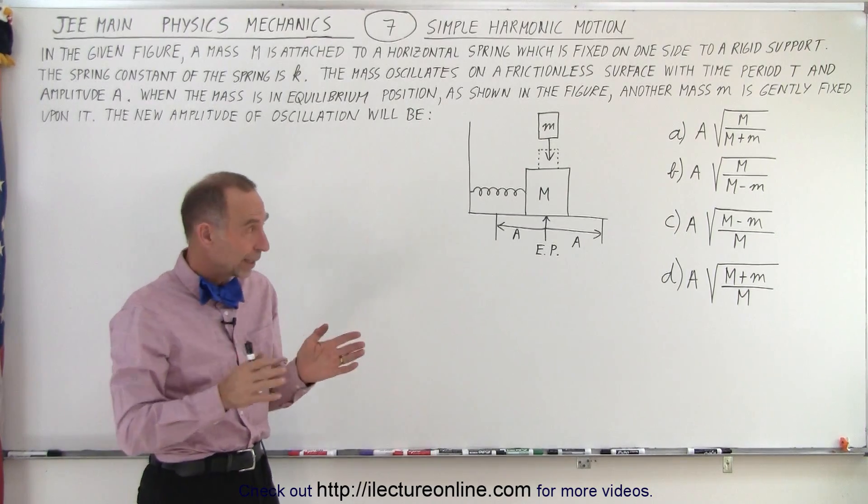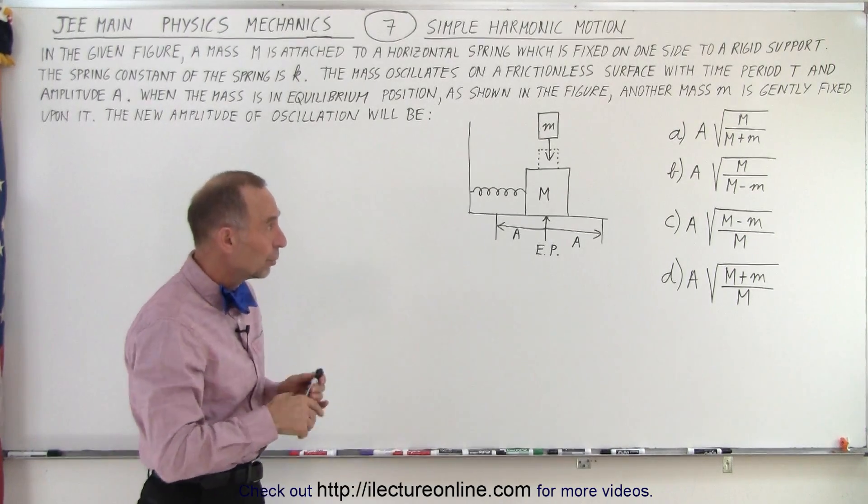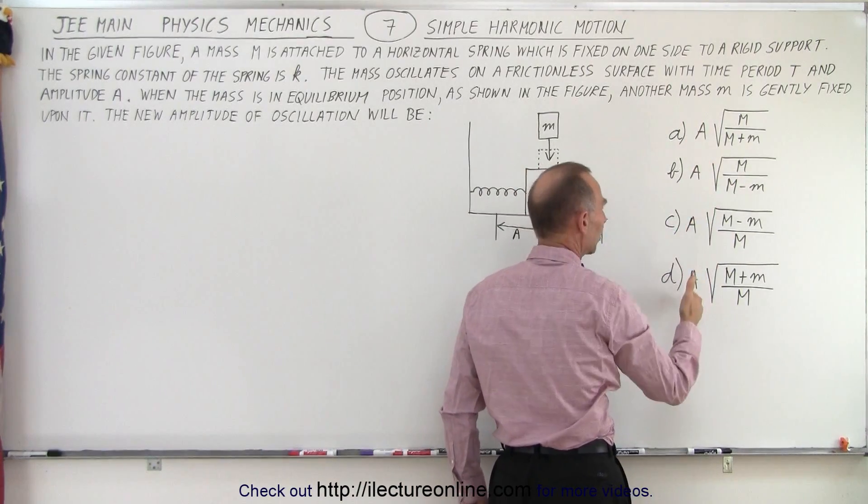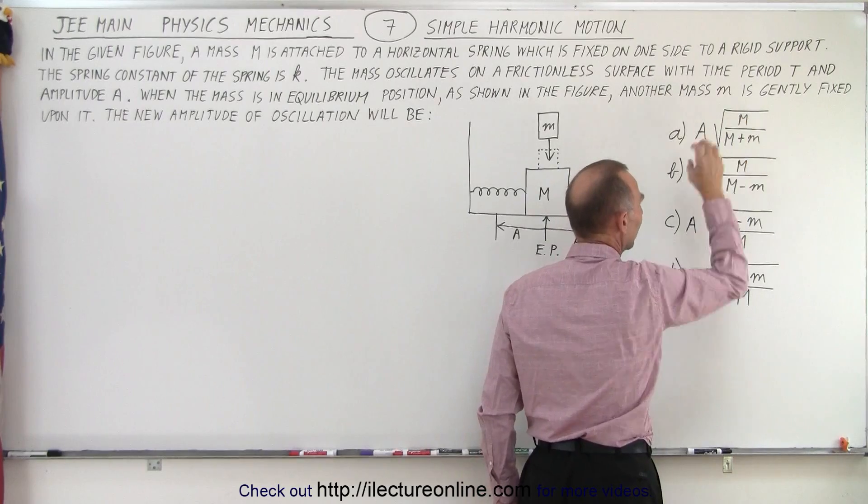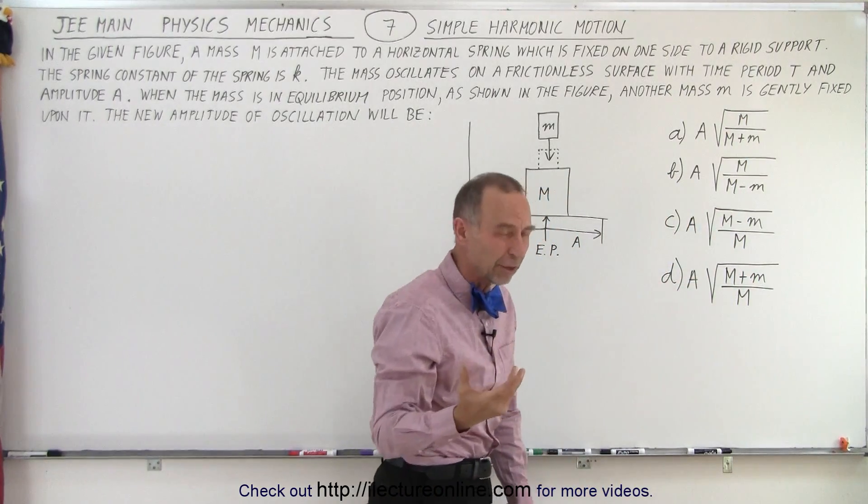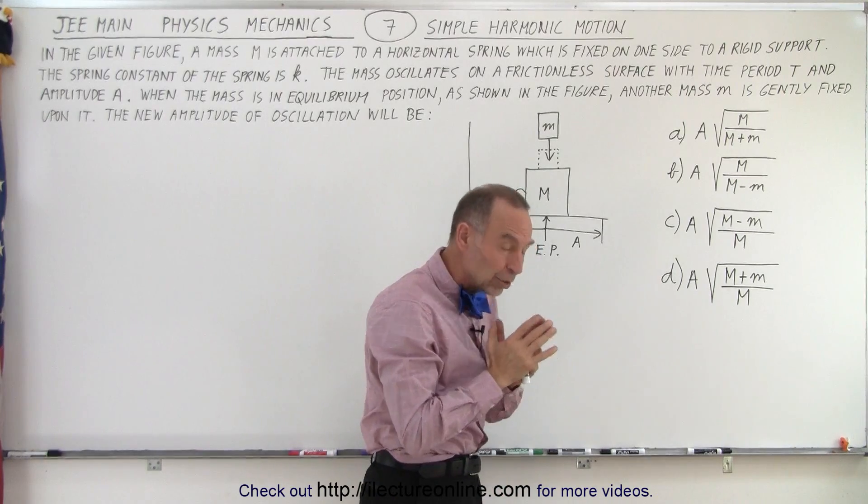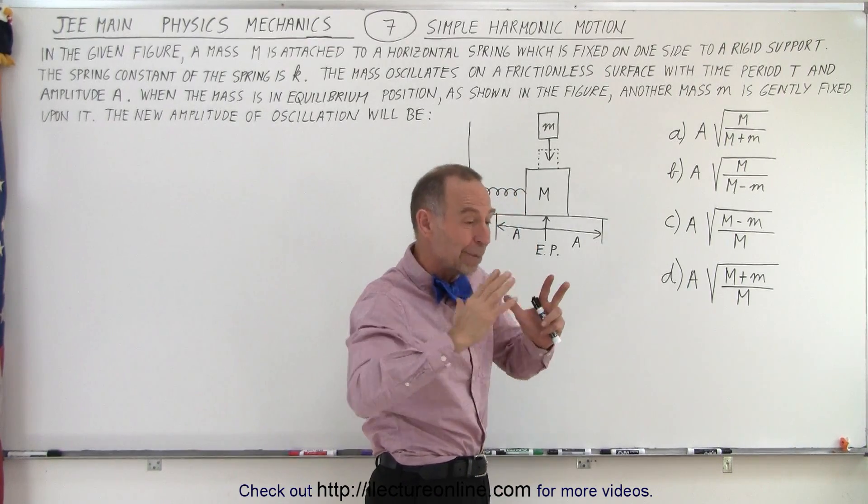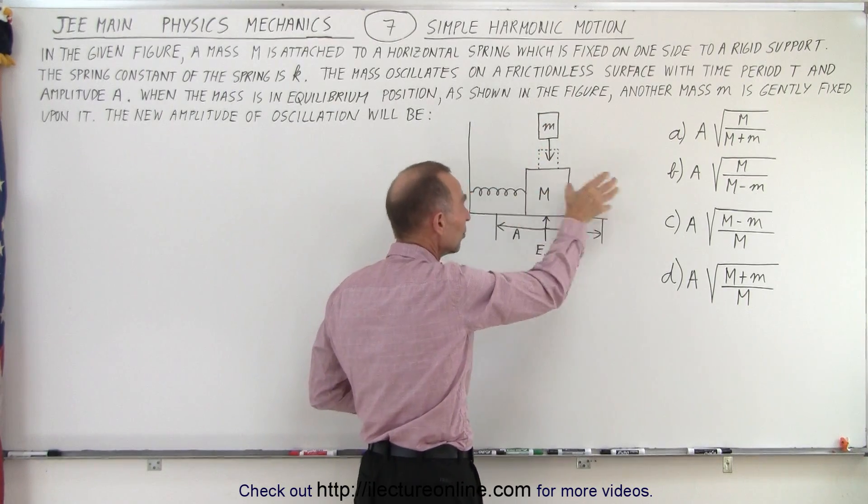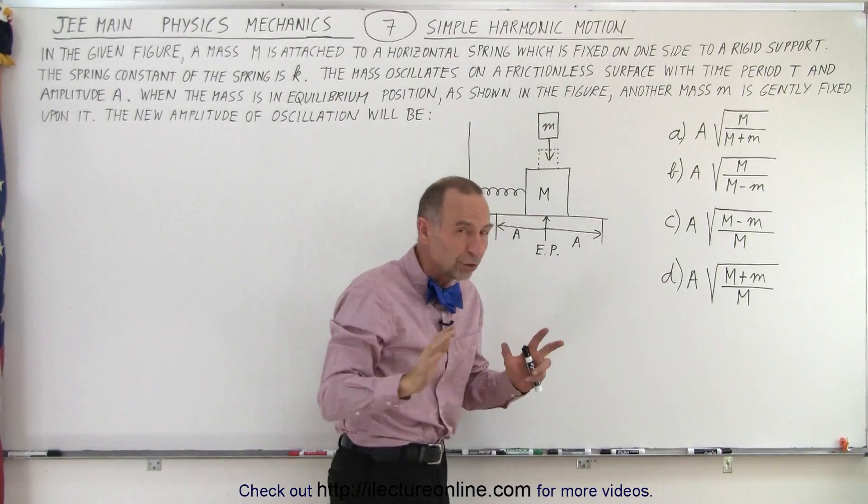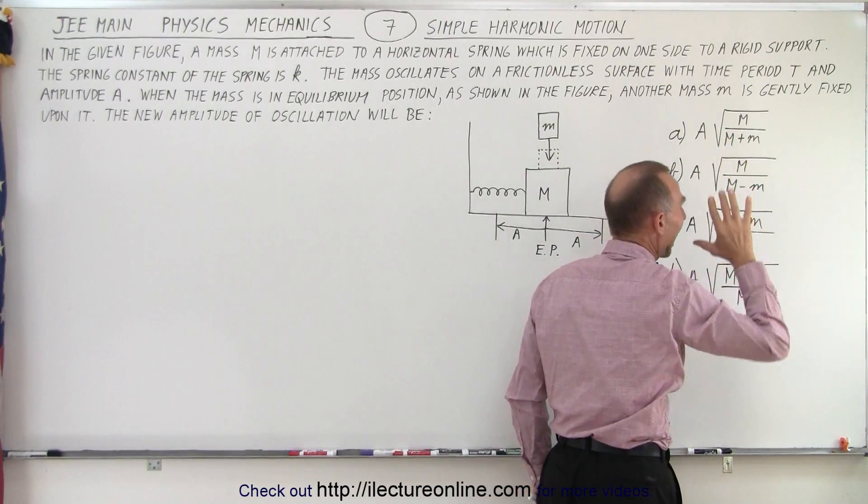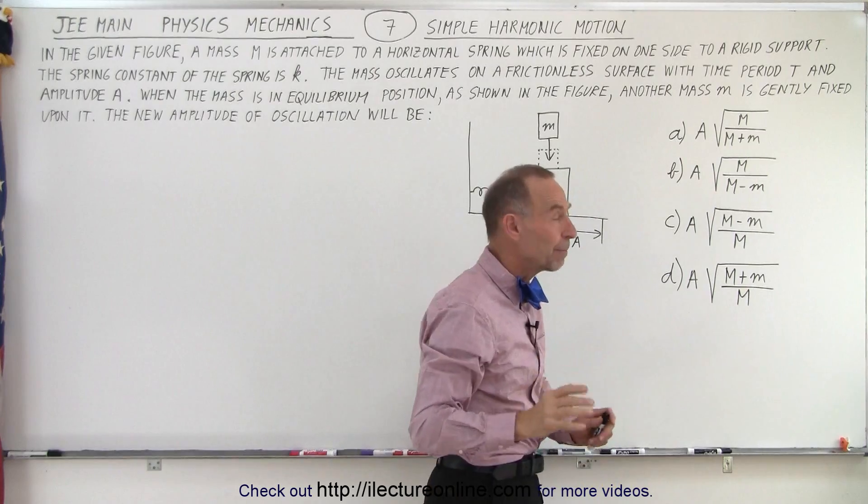Now, when you take a look at them, notice that the new amplitude is in terms of the old amplitude times some sort of fraction. Well, it could be a number that's bigger than one or a number that's smaller than one. Now definitely you would not expect the amplitude to be bigger afterwards when you place another mass on top of it. Now you have more mass to move back and forth, your amplitude is going to decline.